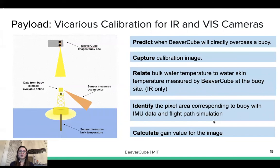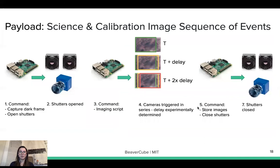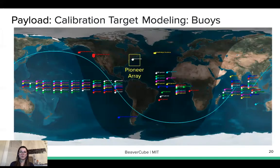To calibrate, we are going to use buoys, using a technique that does not require hardware on board to reduce overall mass, cost, and complexity. We predict BeaverCube's location and when it overpasses buoys in the oceans, we take the bulk water temperature from the buoy and compare it with the temperature measured by BeaverCube. We then identify the pixel area corresponding to the buoy using IMU data and compare both datasets to calculate a gain value for the image, both for the infrared and visual channels. Here is a map showing the positions of the buoys we can use to calibrate our system.